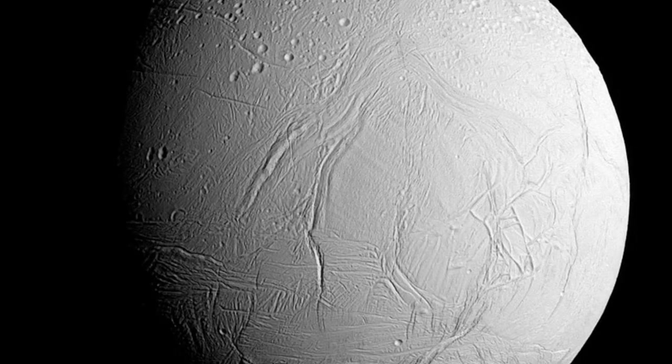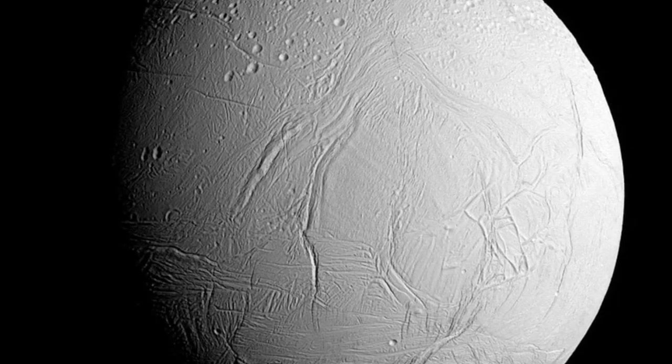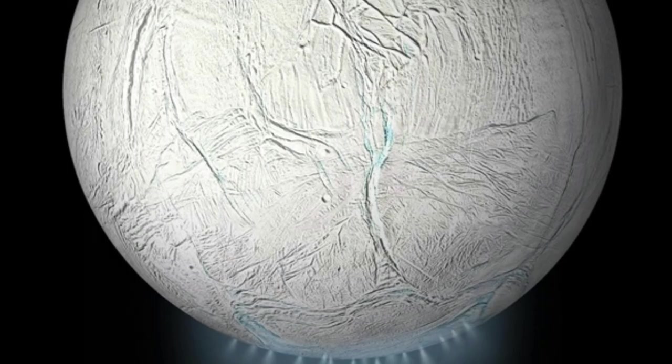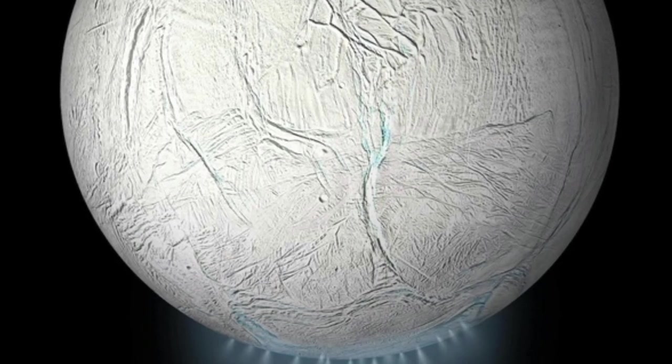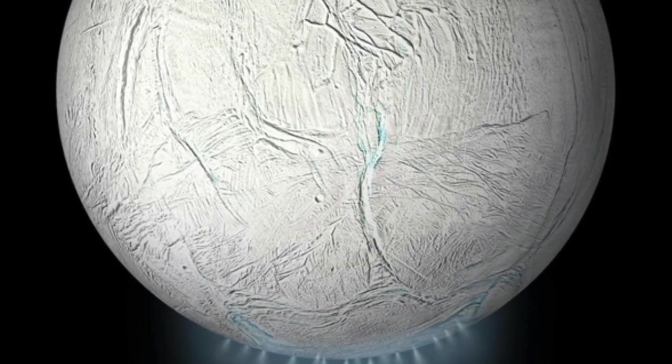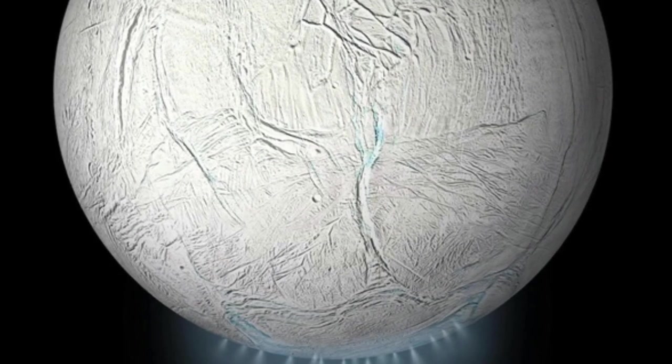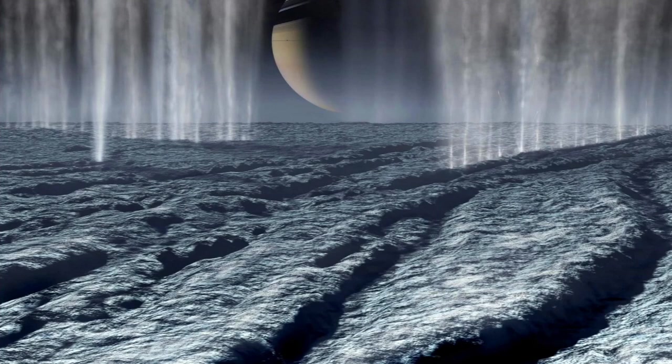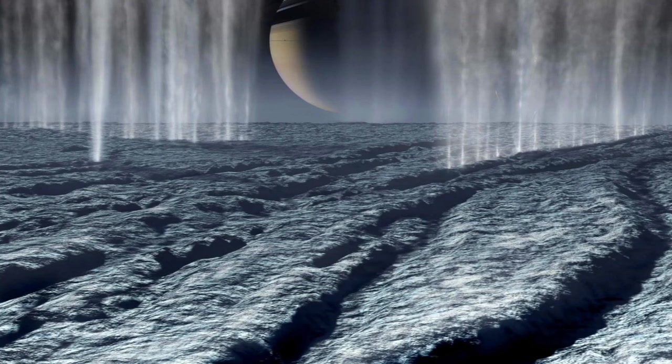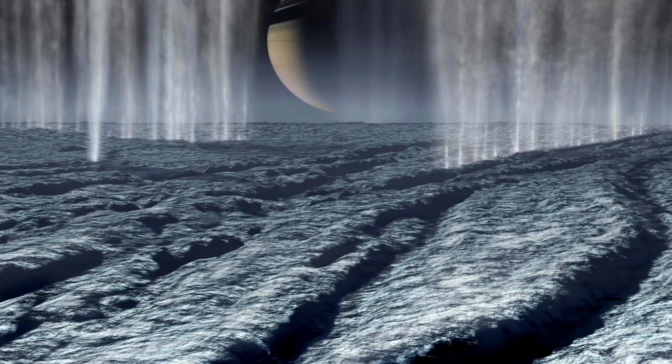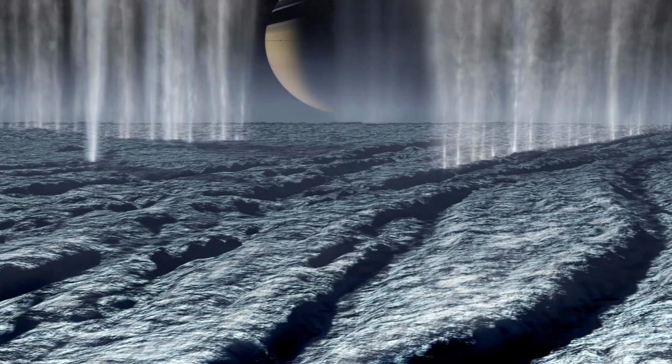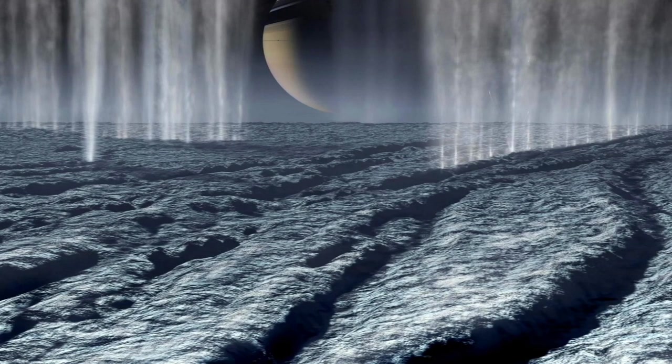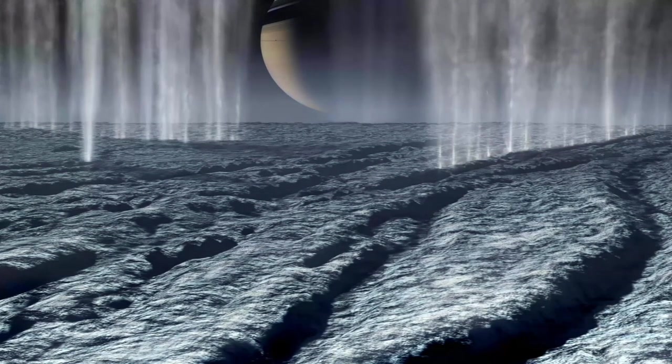Another compelling world is Saturn's icy ocean moon, Enceladus. A handful of worlds are thought to have liquid water oceans beneath their frozen shell, but Enceladus sprays its ocean out into space where a spacecraft can sample it. From these samples, scientists have determined that Enceladus has most of the chemical ingredients needed for life. And likely has hydrothermal vents spewing out hot, mineral-rich water into its ocean.